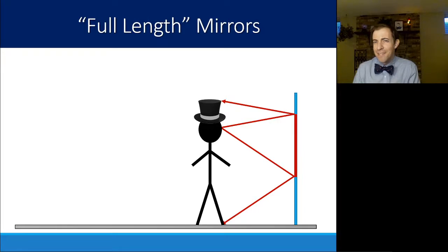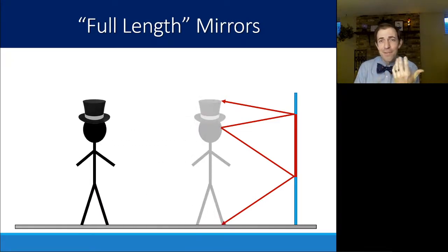This doesn't feel super intuitive because when you look, when you move backward, you become smaller in the mirror. But that doesn't really tell you anything about the size of the mirror that's required. So let's try that. Let's move this person backward and try the same thing.